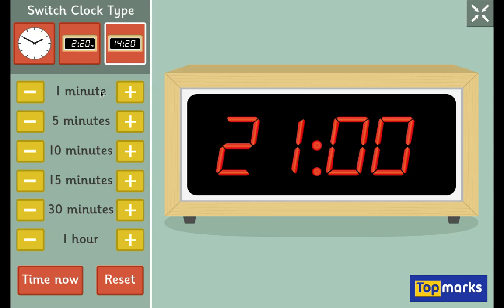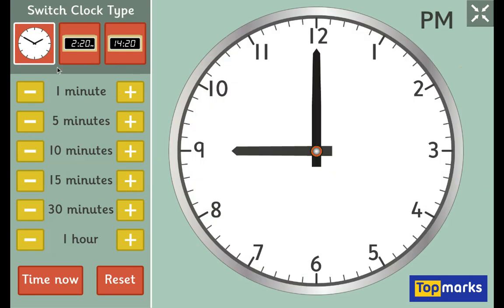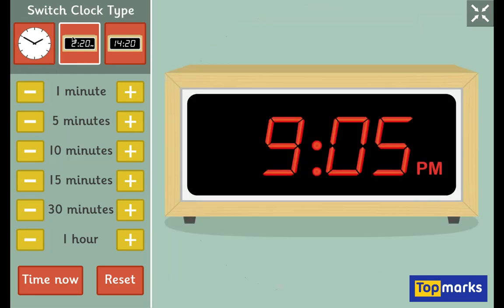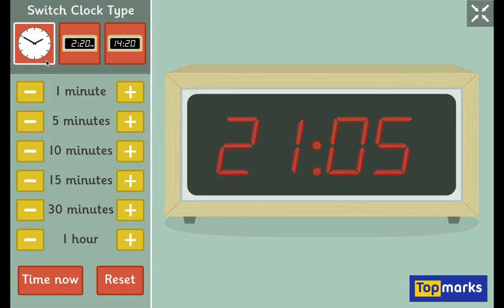If we go back to our normal clock and go 5 minutes past, our digital time would then be 9.05, which is 5 minutes past, or 21.05, which shows us we're within the evening. Thank you.